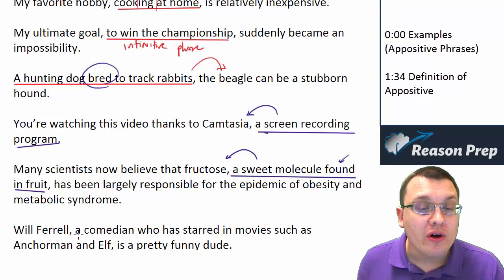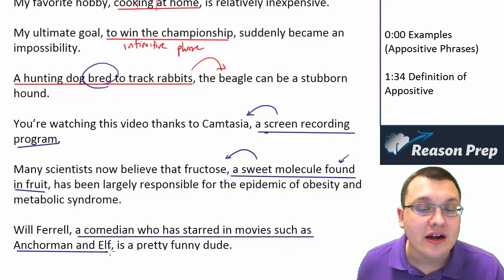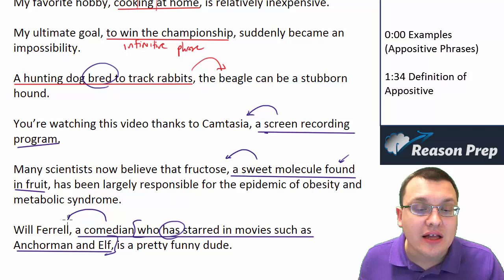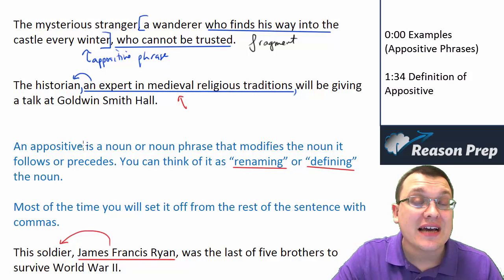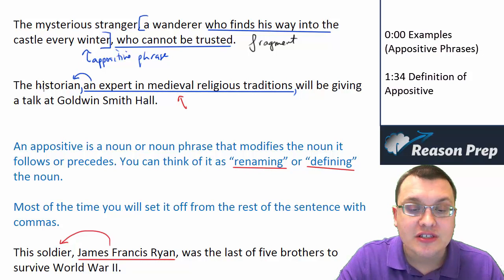'Will Ferrell, a comedian who has starred in movies such as Anchorman and Elf, is a pretty funny dude.' Here we've got an appositive phrase which also contains a relative clause, which itself has a subject 'who' and a verb 'has.' So you can nest these clauses and phrases together. For the test, just recognize appositive phrases and know that they are legal. Connect them to sentences typically with commas, but sometimes commas aren't required. Use your rules for essential and non-essential elements and you'll be good on any question involving appositive phrases.